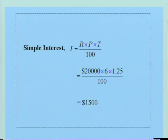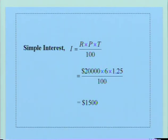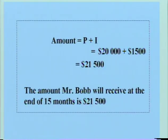Simple interest: the formula is I = PRT divided by 100. In this case, principal is $20,000, rate is 6%, and time is 1.25 years. So it is 20,000 times 6 times 1.25 divided by 100, which gives us $1,500. Amount equals principal plus interest: $20,000 plus $1,500, which gives us $21,500. The amount Mr. Bob will receive at the end of 15 months is $21,500.